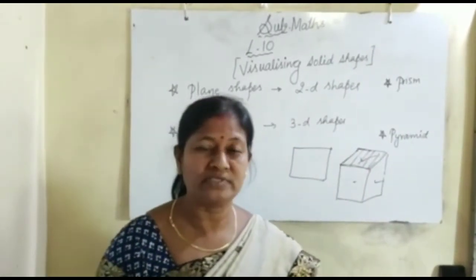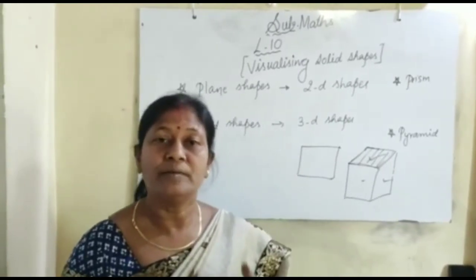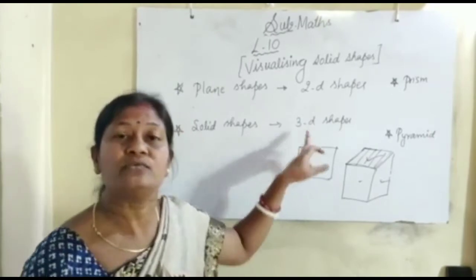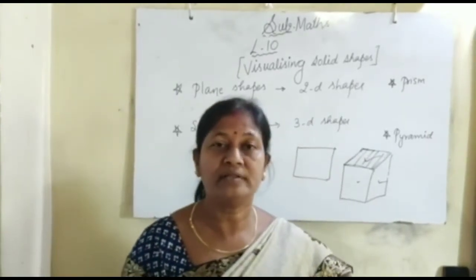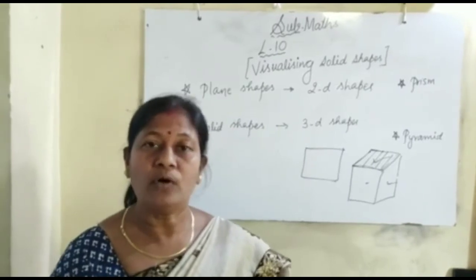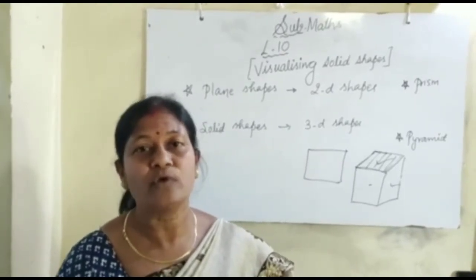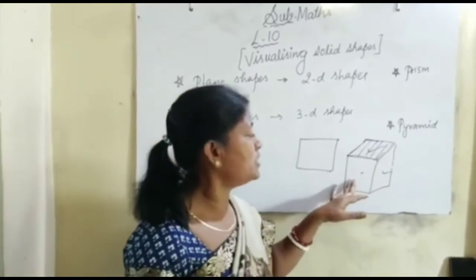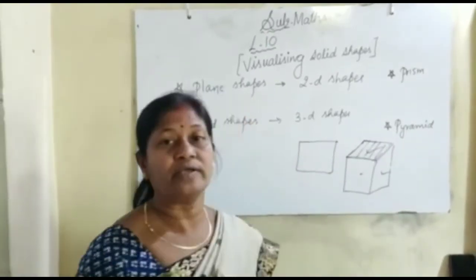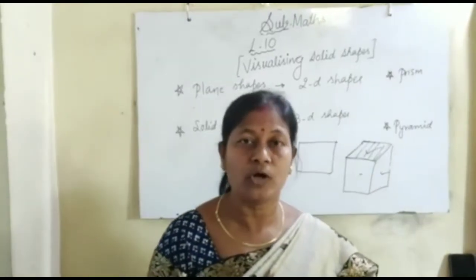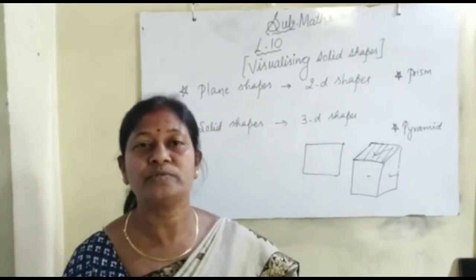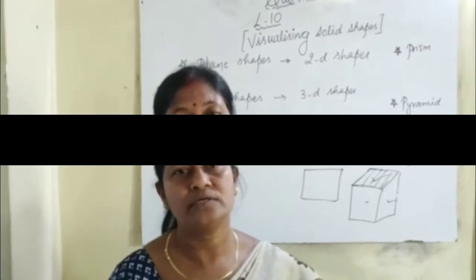This is the difference between 2D and 3D shapes. The '2D' means two-dimensional — it has only two dimensions, that is length and breadth. Whereas in case of 3D shapes, it has three dimensions: length, breadth, and height. That is why 2D shapes have only area and no volume, whereas 3D shapes have length, breadth, and height, and that is why they have volume because they occupy space.